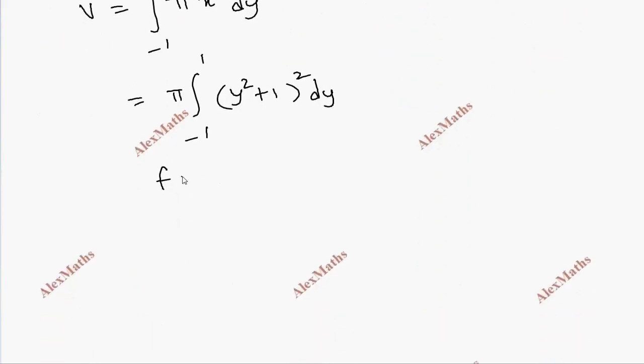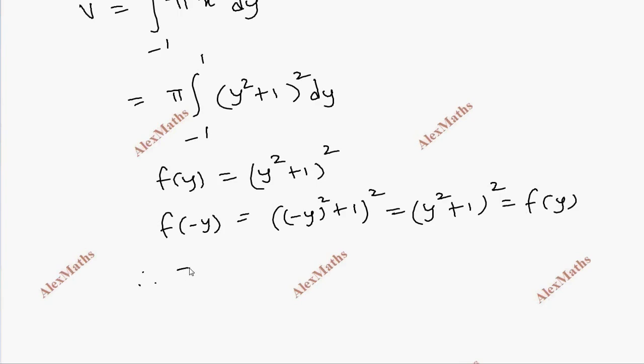One second, f of y is equal to y square plus 1 whole square. But f of minus y is equal to minus y whole square plus 1 whole square. Once again, y square plus 1 whole square is equal to f of y. Therefore, it is even function.